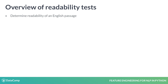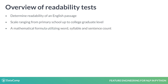The scale usually ranges from primary school up to college graduate level and is in context of the American education system. Readability tests are done using a mathematical formula that utilizes the word, syllable, and sentence count of the passage. They are routinely used by organizations to determine how easy their publications are to understand.